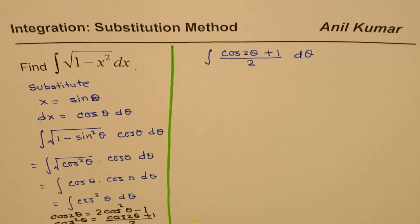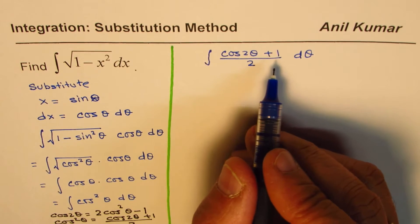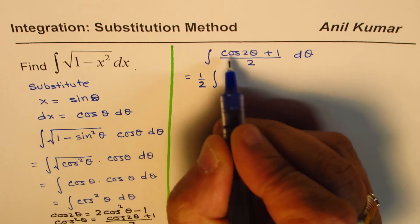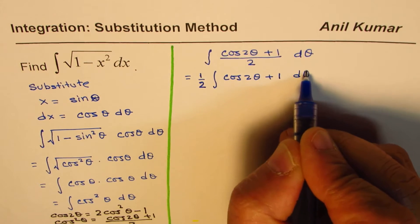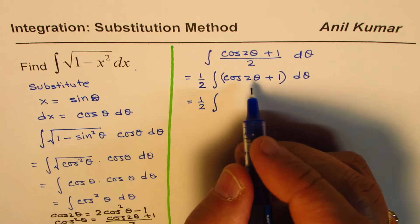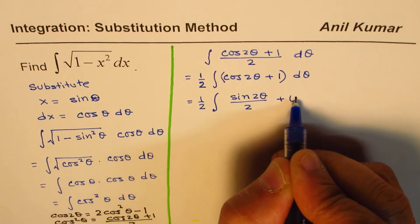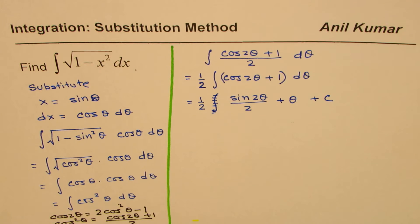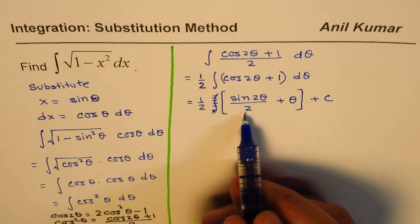This is a much simpler integral to find. Since one half is a constant, we write it outside: one half times the integral of (cosine 2 theta plus 1) d theta. The integral of cosine 2 theta is sine 2 theta divided by 2, and the integral of 1 is theta. So we get one half of (sine 2 theta divided by 2 plus theta).